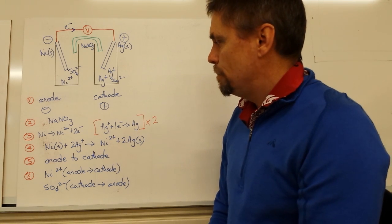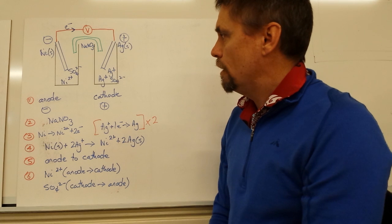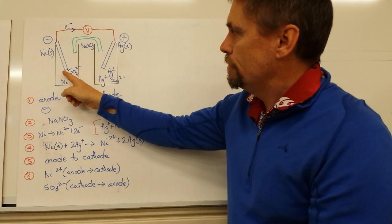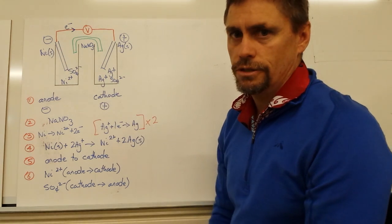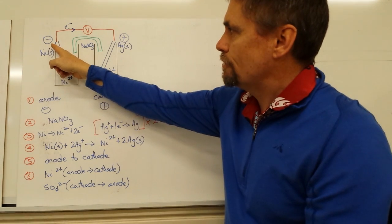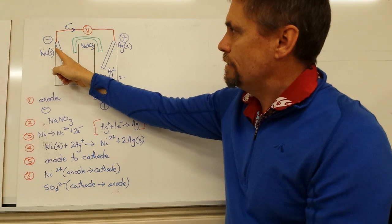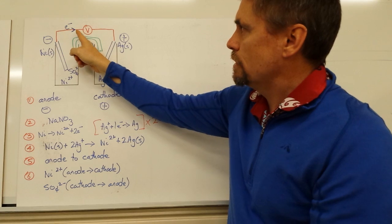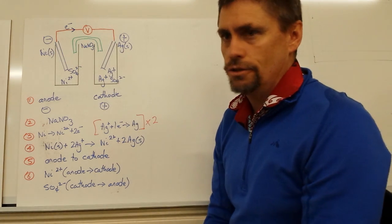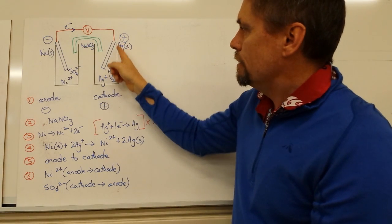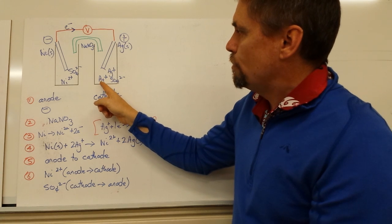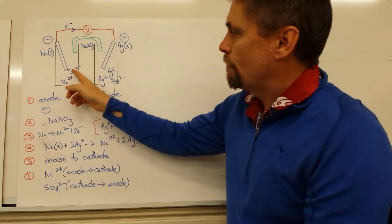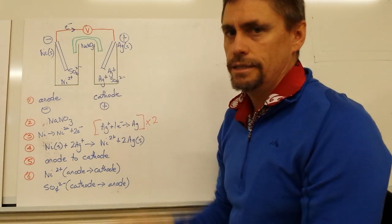We then label the direction of electron flow. At the anode, electrons are produced, so our negative electrode at the anode sends electrons through the external circuit to the silver electrode, where they pick up silver ions. The electron flow always goes from the anode to the cathode.